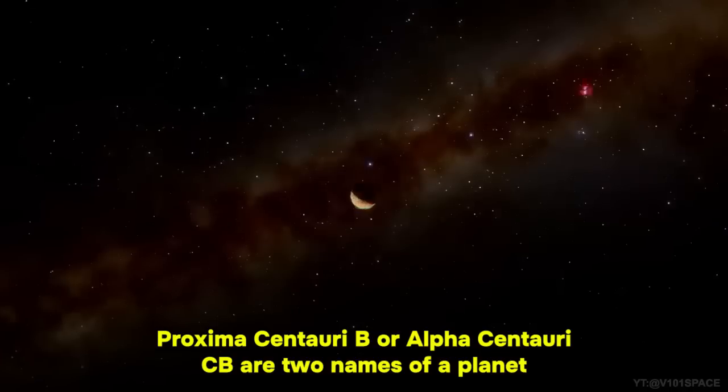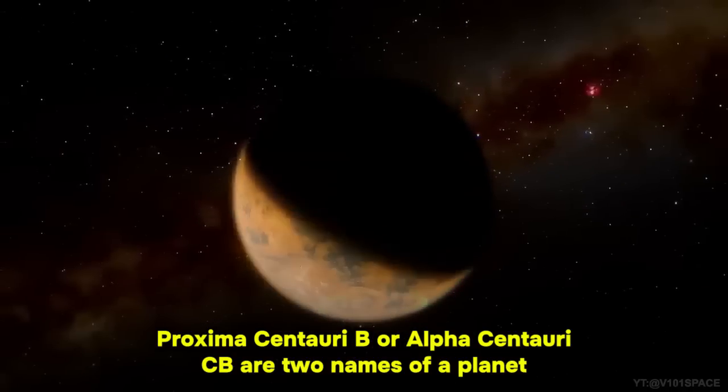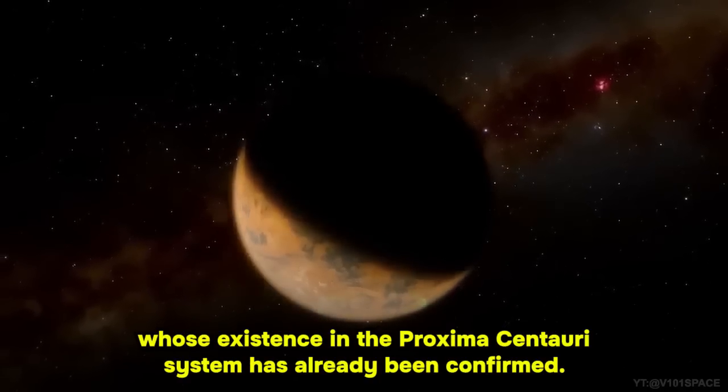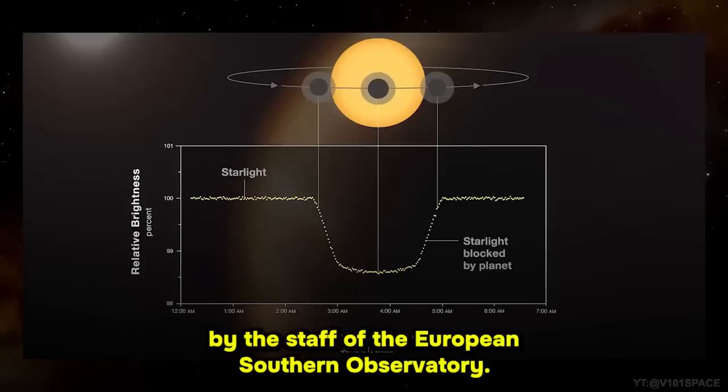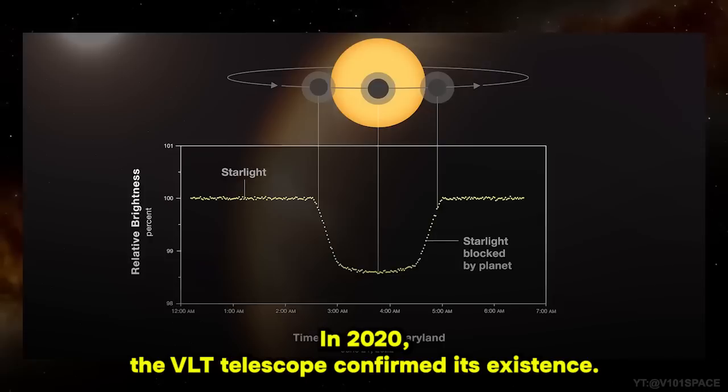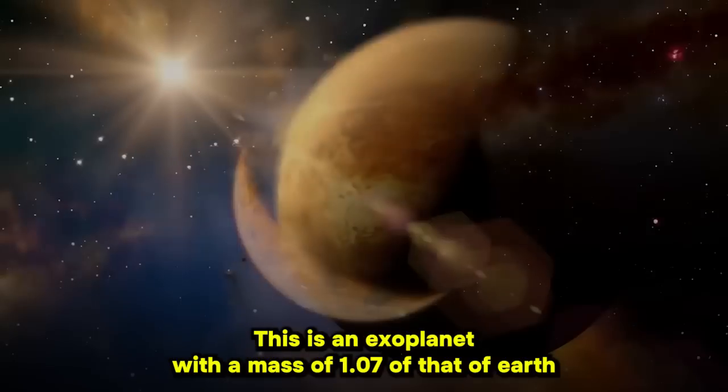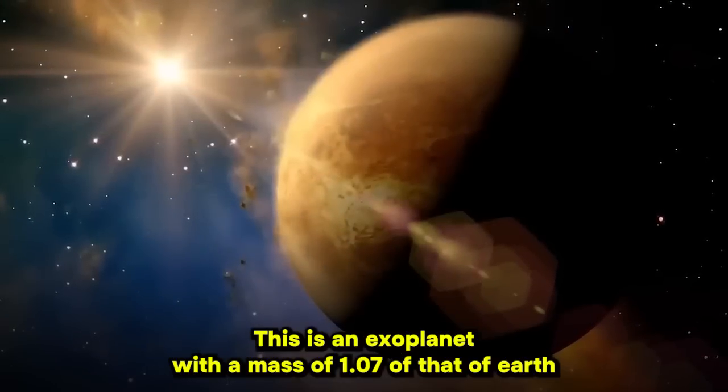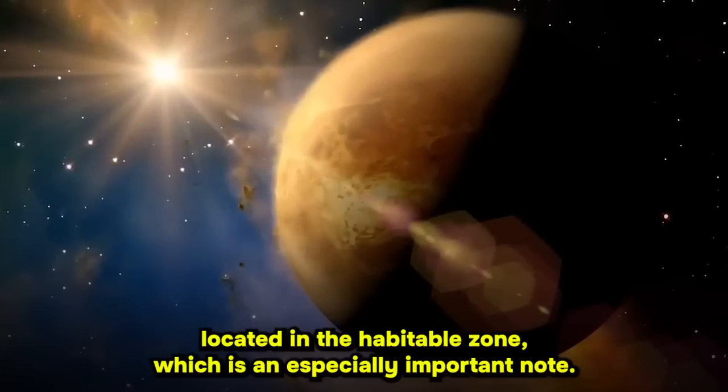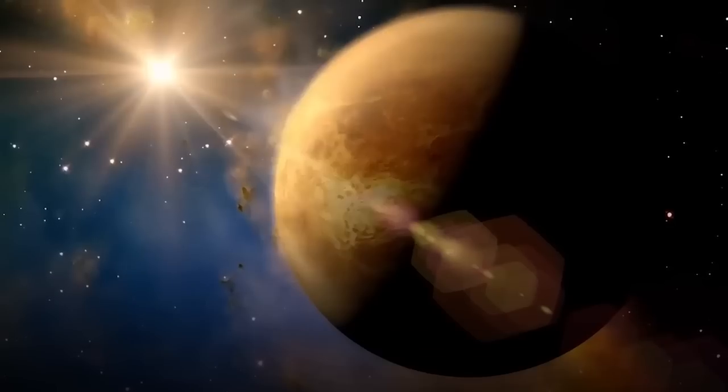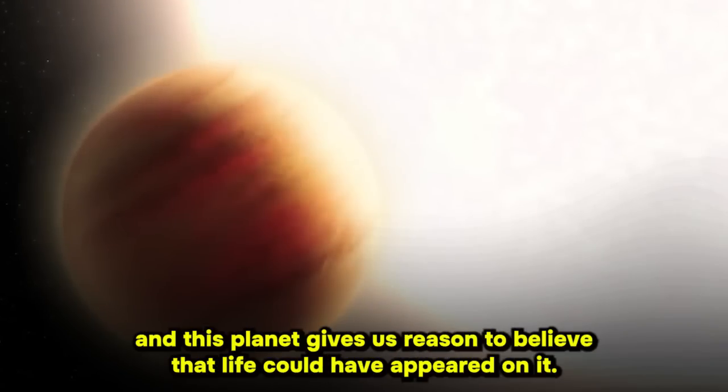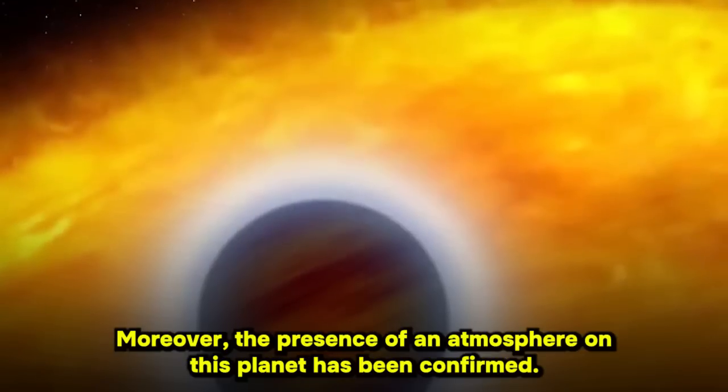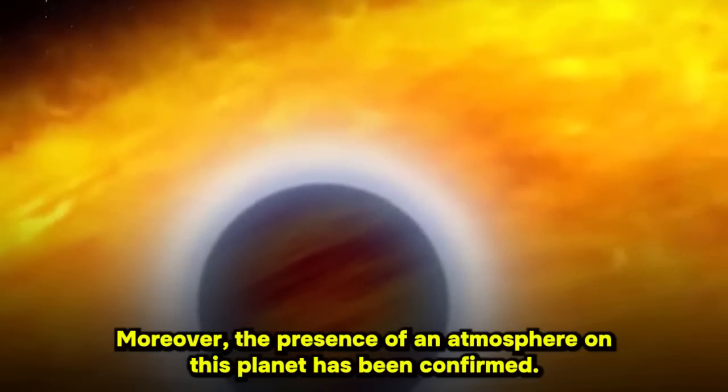Proxima Centauri b or Alpha Centauri cb are two names of a planet whose existence in the Proxima Centauri system has already been confirmed. It was discovered on August 24, 2016, by the staff of the European Southern Observatory. In 2020, the VLT telescope confirmed its existence. This is an exoplanet with a mass of 1.07 of that of Earth, located in the habitable zone, which is an especially important note. This means that the distance between Proxima Centauri and this planet gives us reason to believe that life could have appeared on it. Moreover, the presence of an atmosphere on this planet has been confirmed.